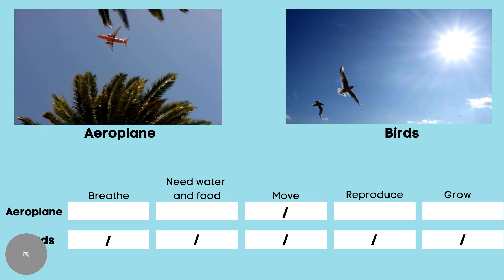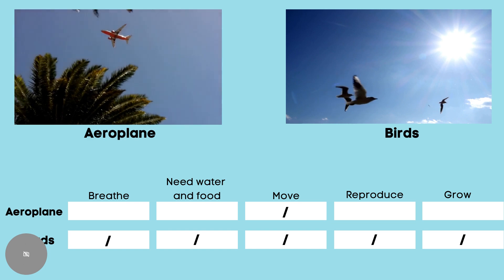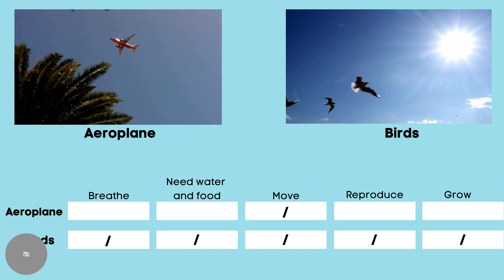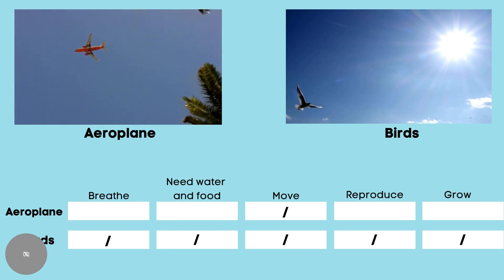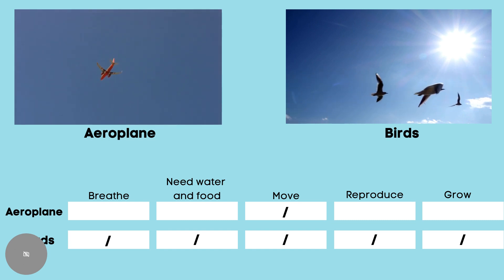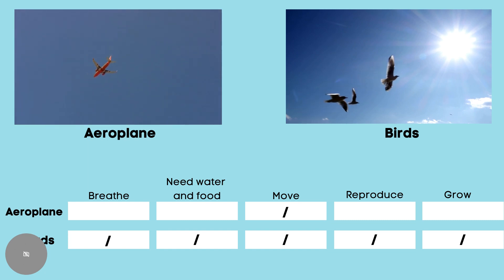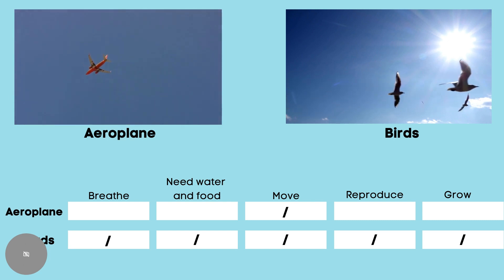What is the similarity that you can find between the aeroplane and the birds? Now, let us look at the table at the bottom of the videos. The characteristics of living things are written on the top of the table. The characteristics are: breathe, need water and food, move, reproduce, and grow.